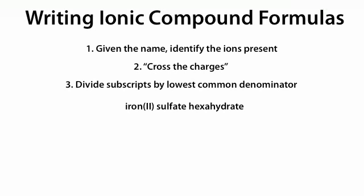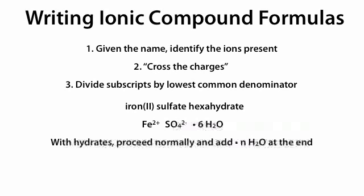Iron(II) sulfate hexahydrate: iron(II) is Fe2+, sulfate is SO42-, and hexahydrate is ·6H2O. With hydrates, we proceed normally and add our number of H2O's at the end. We cross the charges for Fe2+ and SO42- to get FeSO4, and add ·6H2O at the end.